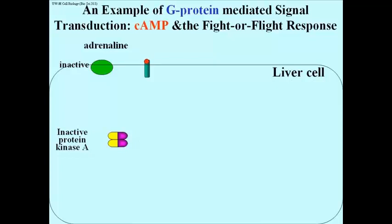After adrenaline binds its receptor, the G-protein mediated response activates adenylyl cyclase, which results in cyclic AMP synthesis, as shown here.